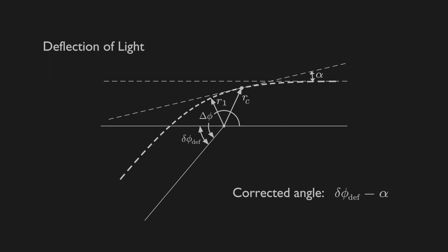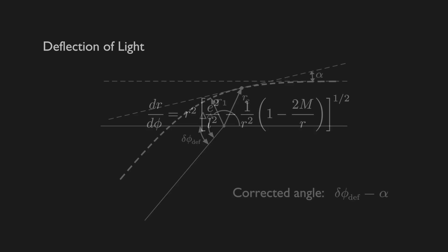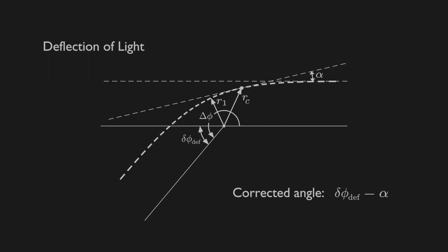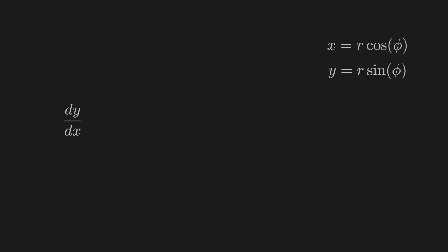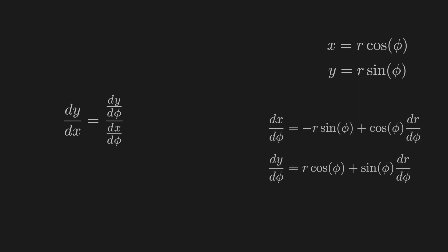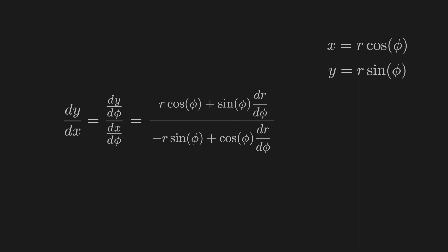So we need to find alpha. Whenever I'm thinking of how to solve a problem like this, I like to start by listing quantities that we do know, to see if there is something we can use. In this case, we have calculated dr dphi in the last video. What I came up with was to calculate the slope of this tangent line. If we know the slope, we know alpha, because this is just the arctangent of the slope. We can convert polar coordinates into cartesian coordinates using these formulas, and dy dx equals dy dphi divided by dx dphi. The expression for the slope of the tangent is then this. Phi we can find by integrating dphi dr from r equals infinity up to r.